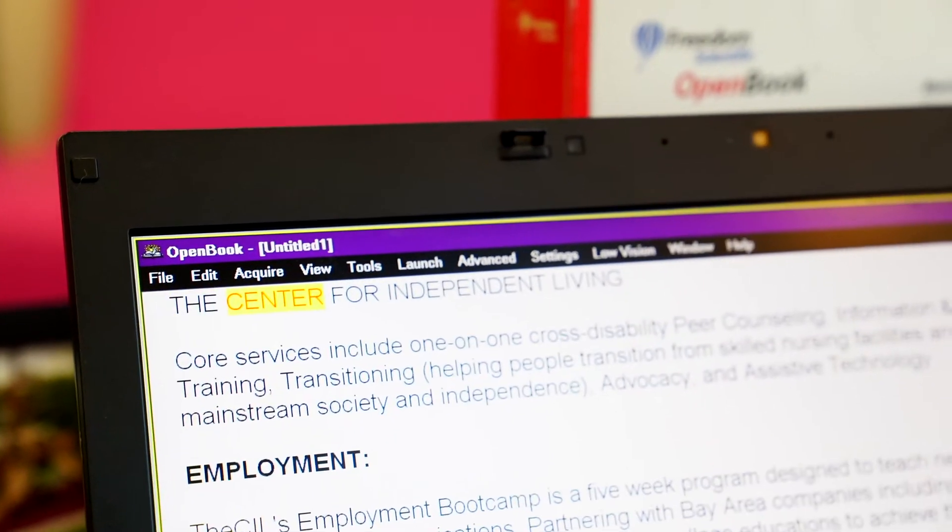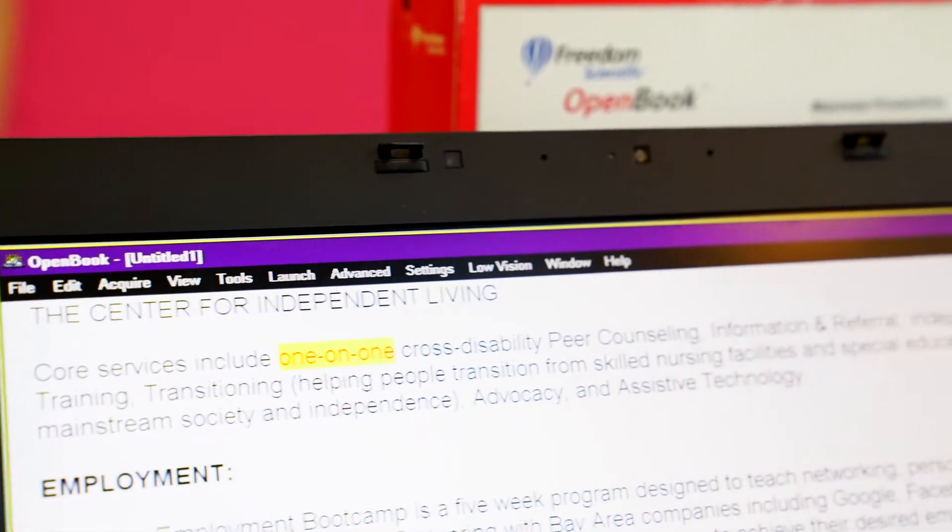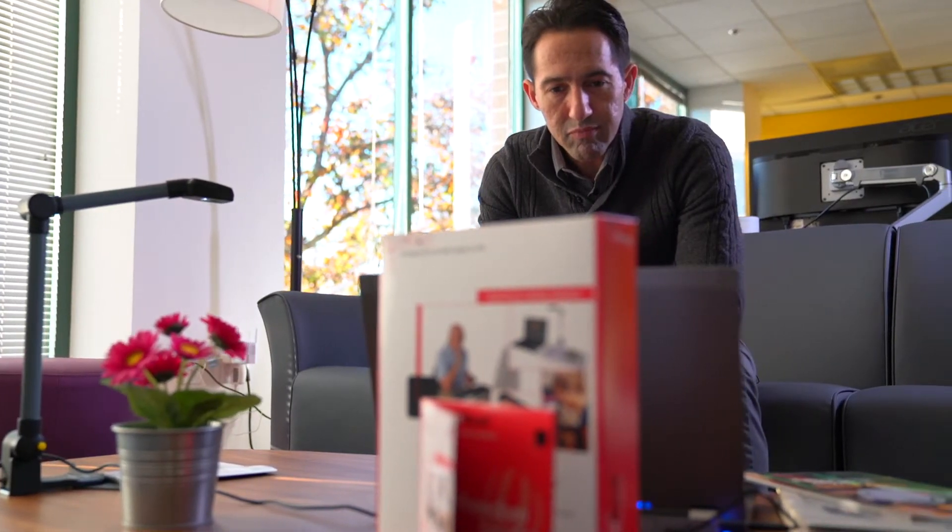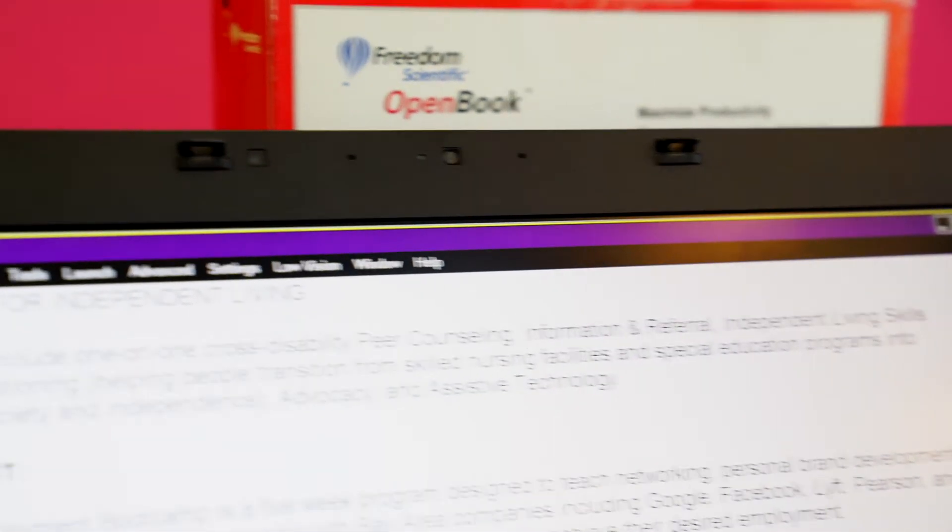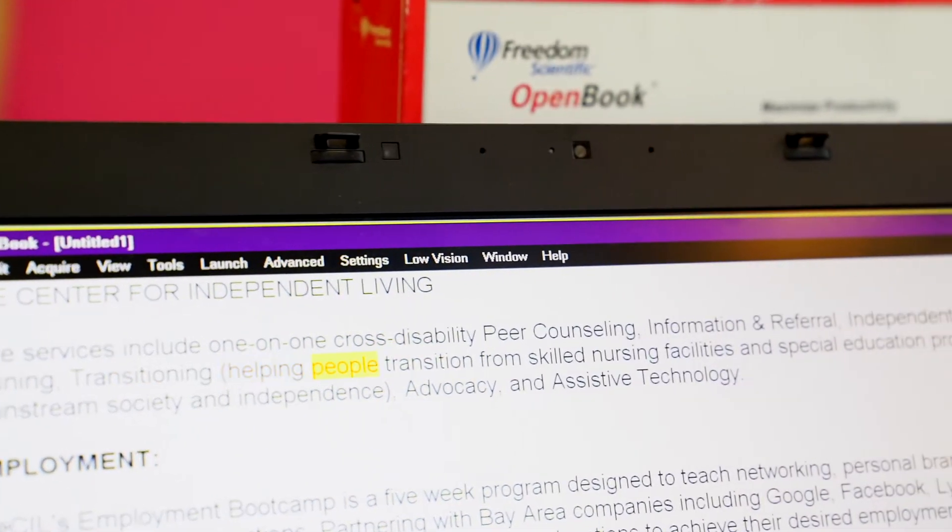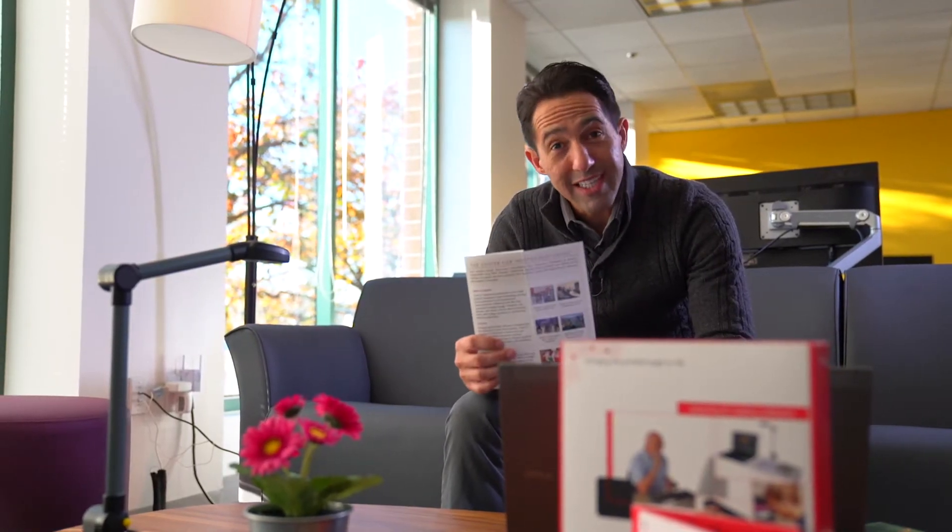Letter one, the Center for Independent Living. Core services include one-on-one cross-disability peer counseling, information and referral, independent living skills training, transitioning, helping people transition from skilled nursing facilities. Well, it seemed to handle the brochure with ease. It was unfazed. That's a term I like to use, kind of fun.